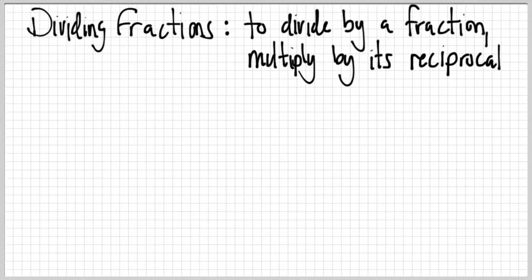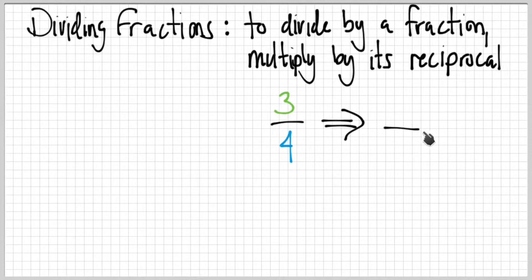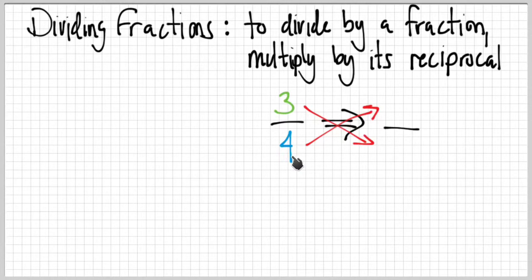What is a reciprocal? Let's look at the fraction three-fourths and find its reciprocal. The reciprocal is another fraction — the way we find it is we simply flip it, we invert it. The denominator becomes the numerator and the numerator becomes the denominator — top becomes bottom, bottom becomes top. So the reciprocal of three-fourths is four-thirds.